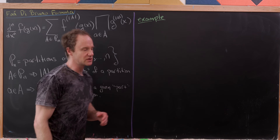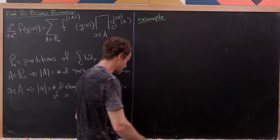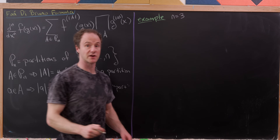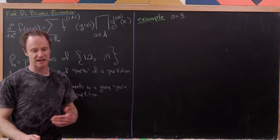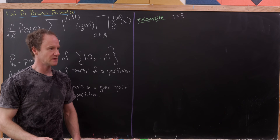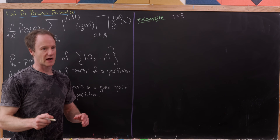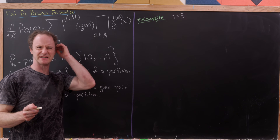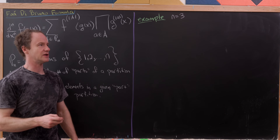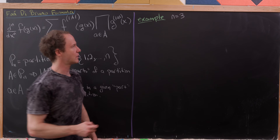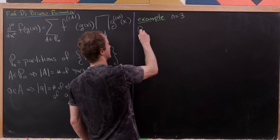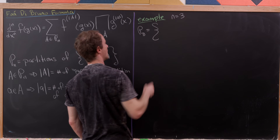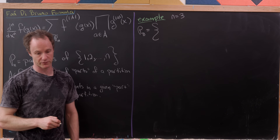Let's look at an example. The smallest example that really helps us understand what's going on is the n=3 case. If you want to work out n=1 and n=2 you can, but those are easy to see just by taking the derivative a couple of times.